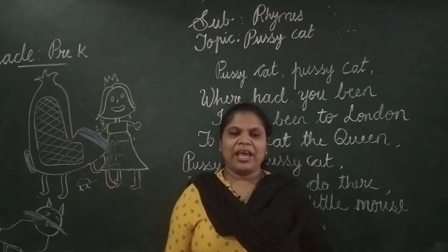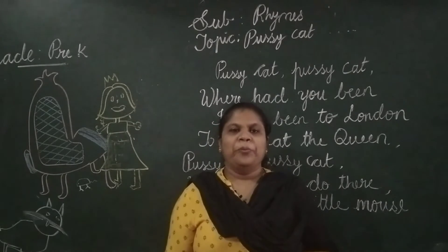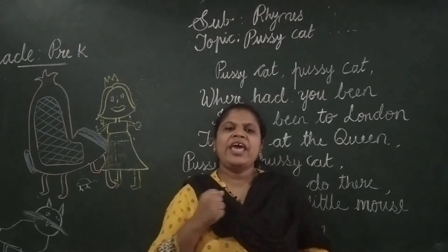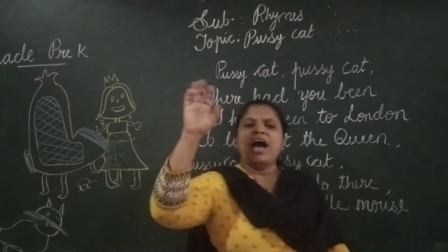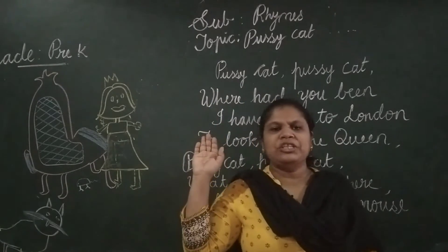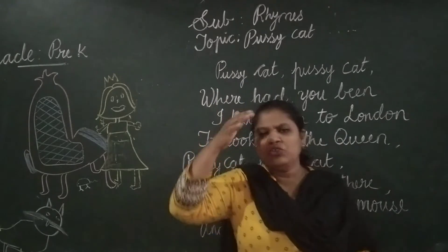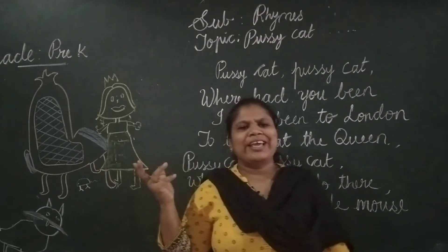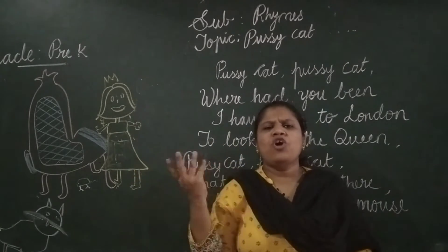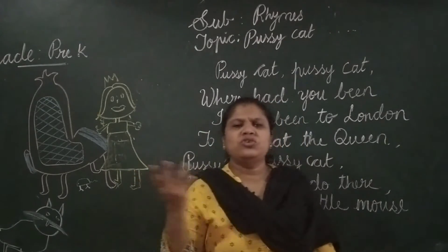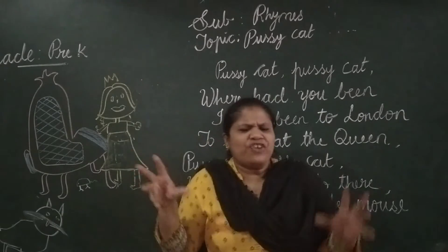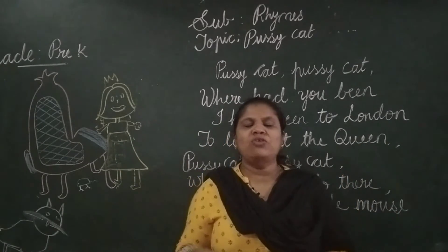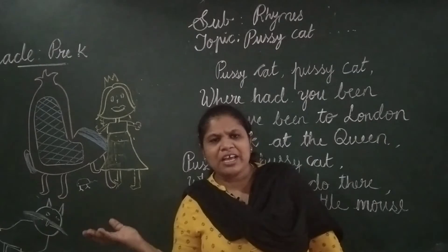Once again. Pussycat, pussycat, where have you been? I have been to London to look at the queen. Pussycat, pussycat, what did you do there? I frightened the little mouse under her chair.